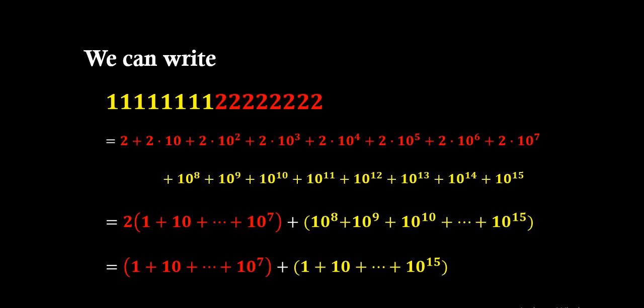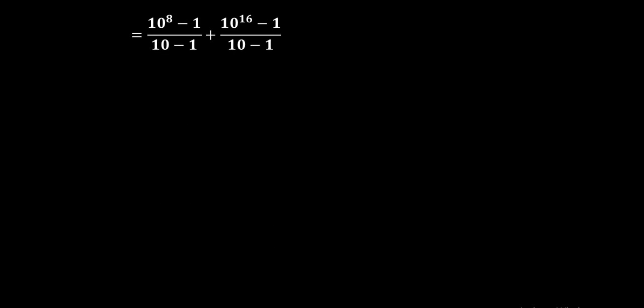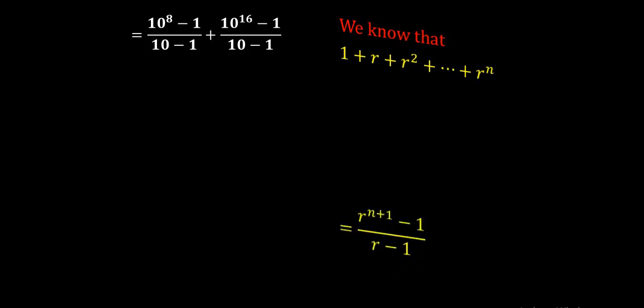Now we need to apply the sum of a finite geometric series. For the first sum we have (10⁸ minus 1) divided by (10 minus 1), where the first term is 1 and the common ratio is 10. For the second one it is (10¹⁶ minus 1) divided by (10 minus 1), with common ratio 10 and first term 1. The formula is: 1 plus r plus r² plus ... plus rⁿ equals (r^(n+1) minus 1) divided by (r minus 1).